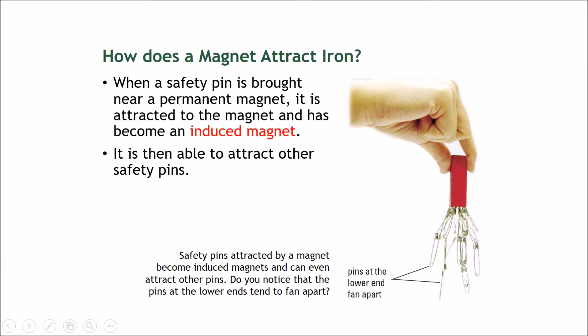But suddenly, other safety pins can also attach to the first layer of safety pins, forming a second layer. And if it's strong enough, third, fourth, and fifth layers may form. How come? Isn't this the only magnet here?